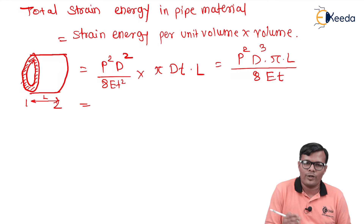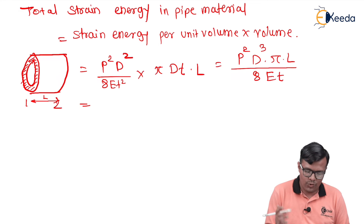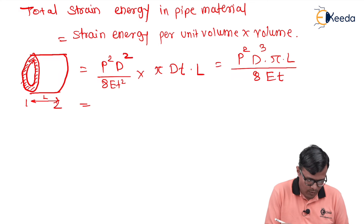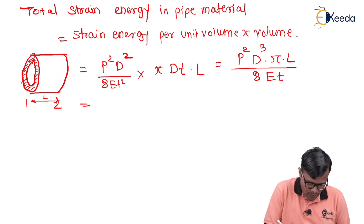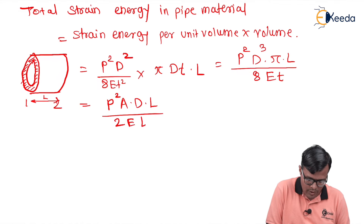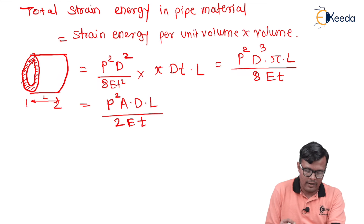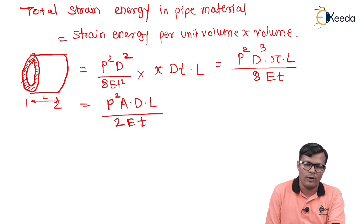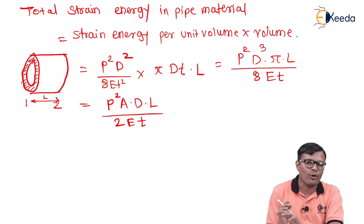Since pi/4 × d² is the formula for cross-sectional area A, we can introduce area A into the formula. This gives total strain energy in pipe material = p²A × d × l / (2Et). This is the strain energy stored only in the pipe material, not in the water.